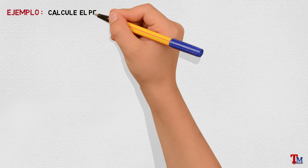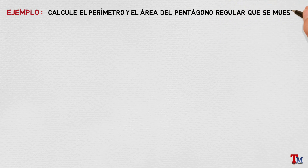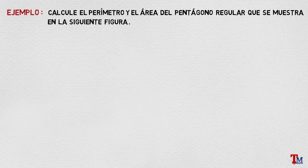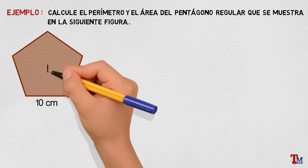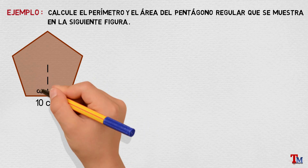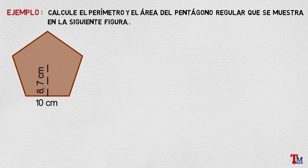Veamos un ejemplo donde apliquemos estas dos definiciones. Calcule el perímetro y el área del pentágono regular que se muestra en la siguiente figura. Tenemos un pentágono donde la longitud de los lados está definida por 10 centímetros y la apotema tiene una longitud de 8,7 centímetros.